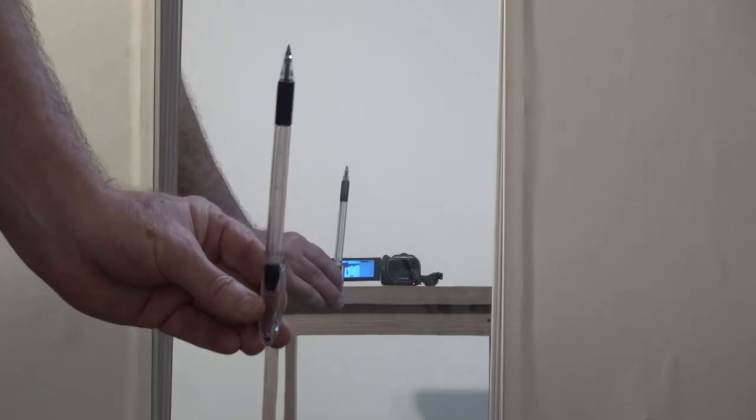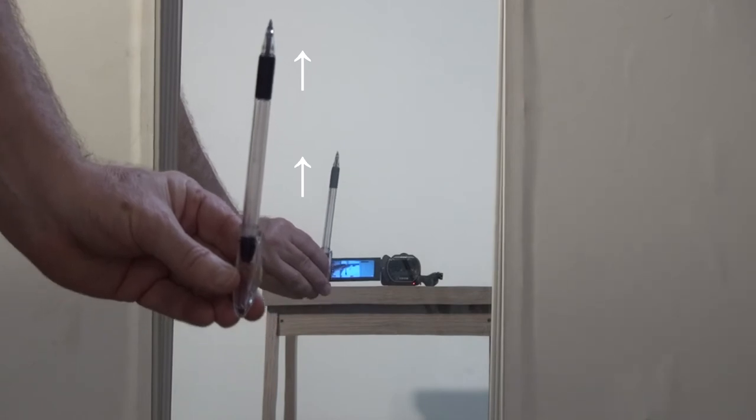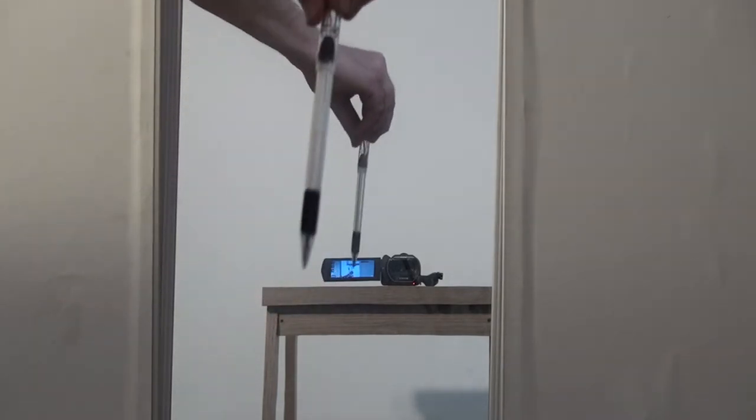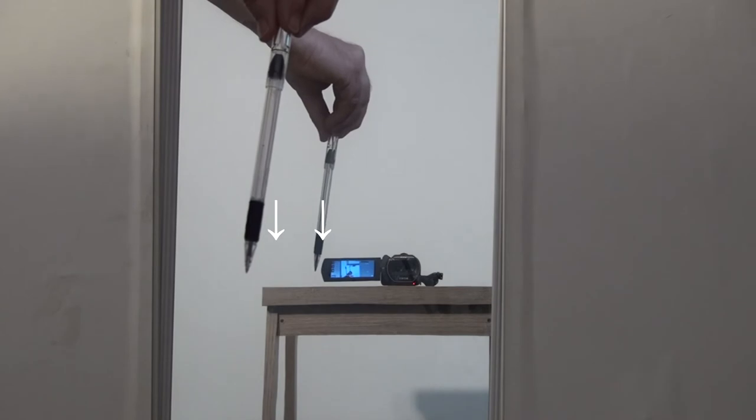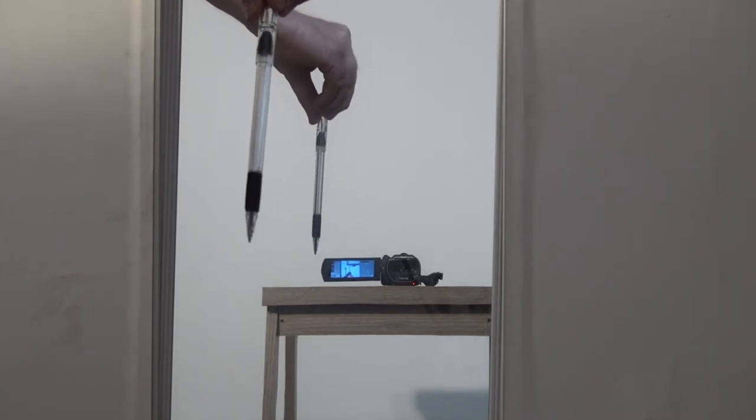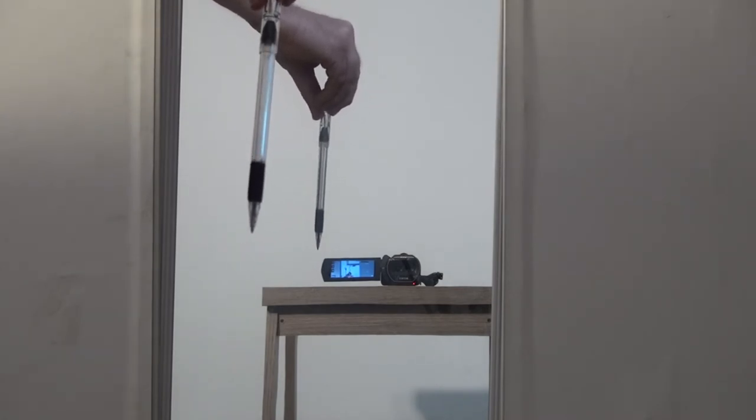If we point the pencil upward, the image also points upward. And if we point the pencil downward, the image also points downward. This means that the mirror is not reversing up and down.